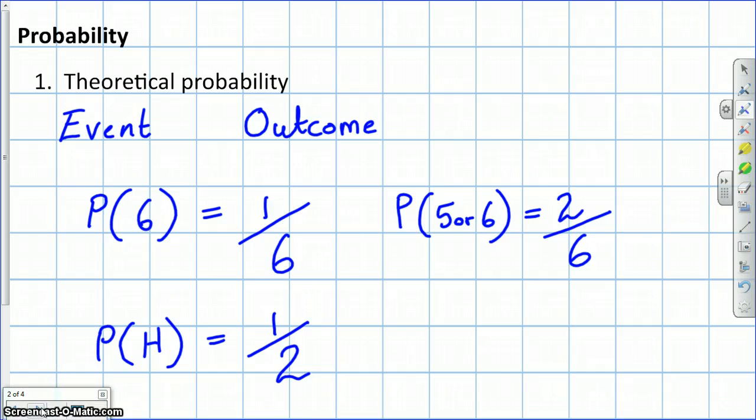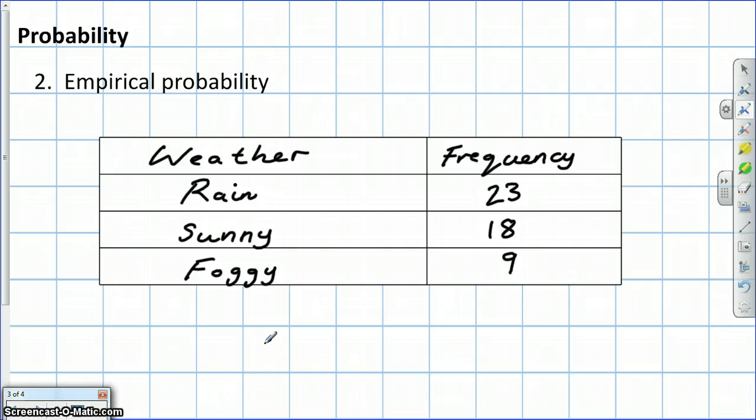Now, we move on to empirical probability. That's when we've carried out some sort of study. It could be, as it is here, looking at the rain over the course of a number of days, or it could be by rolling a dice and seeing how many times a one came up, a two, and so forth. How do we work out probability here? Well, let's have a look again with an example.